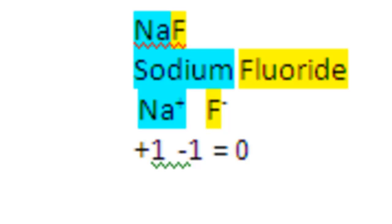Sodium fluoride. I highlighted the metal in light blue and the non-metal yellow, and I'm identifying the cation as sodium and the anion as fluoride. I'm dissecting the formula by noticing that the sodium has a positive one charge and the fluoride has a negative one charge, and when these charges are summed up, they equal zero.